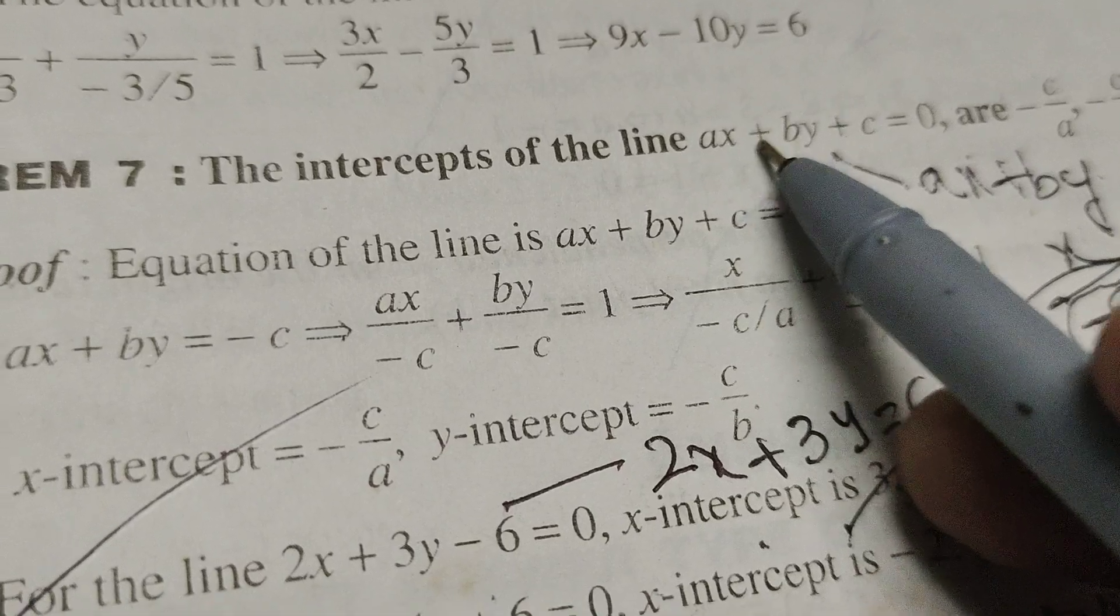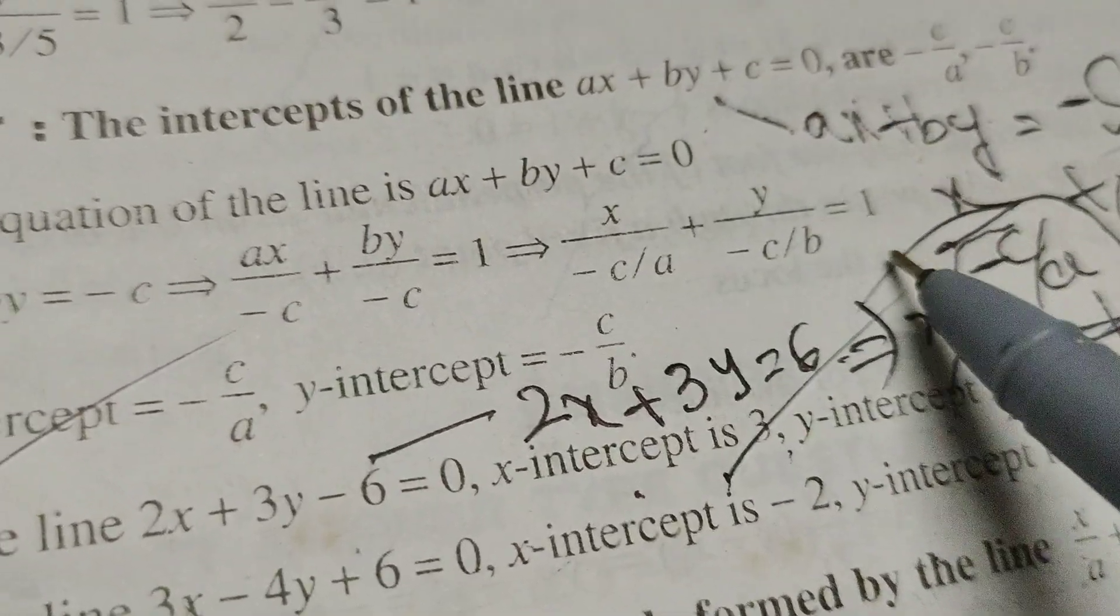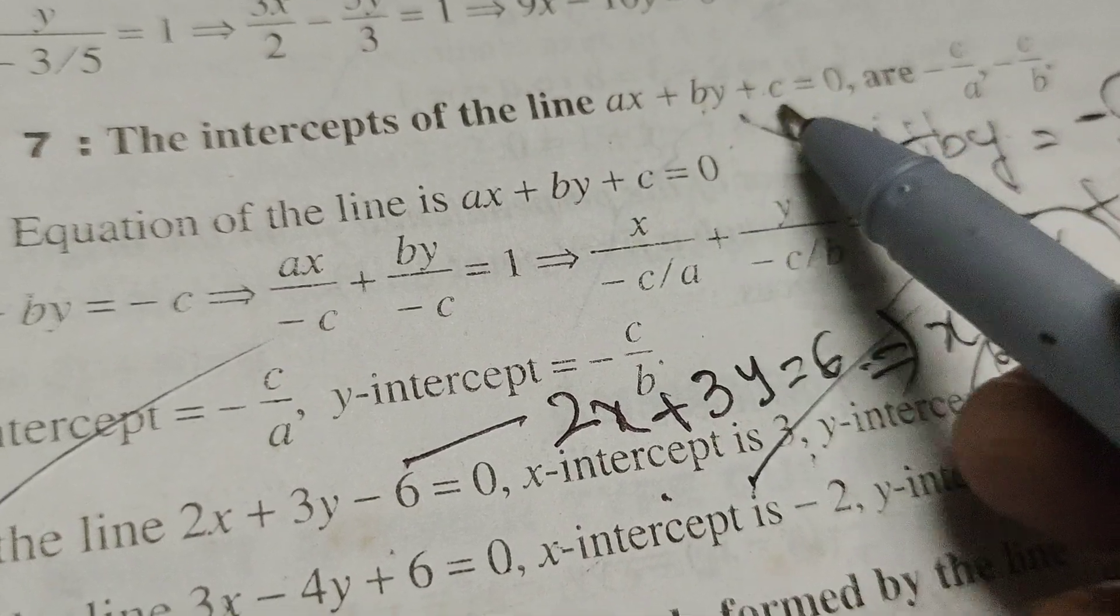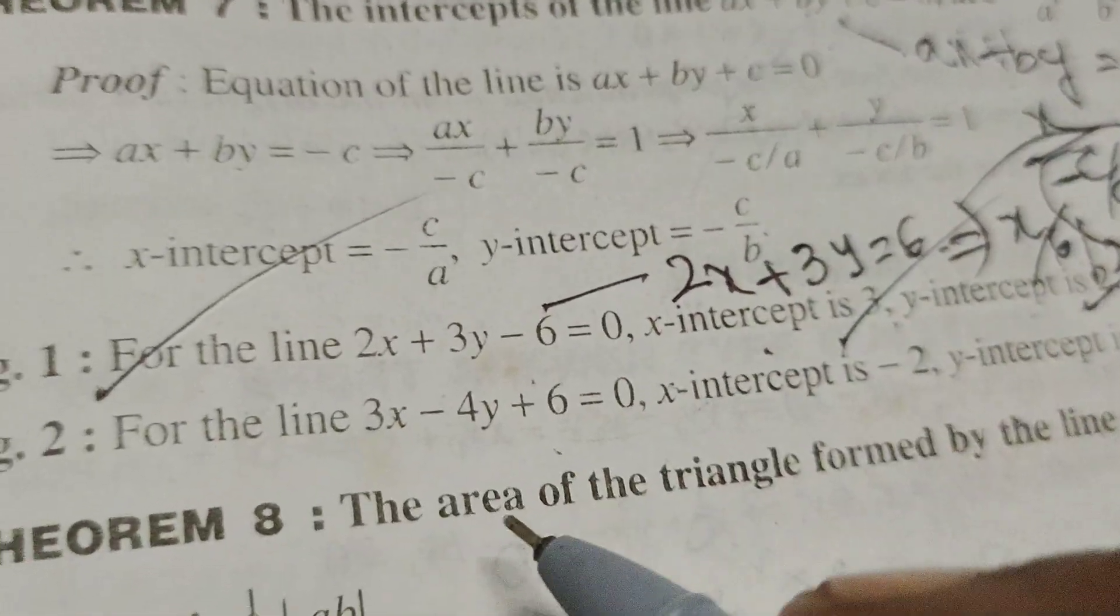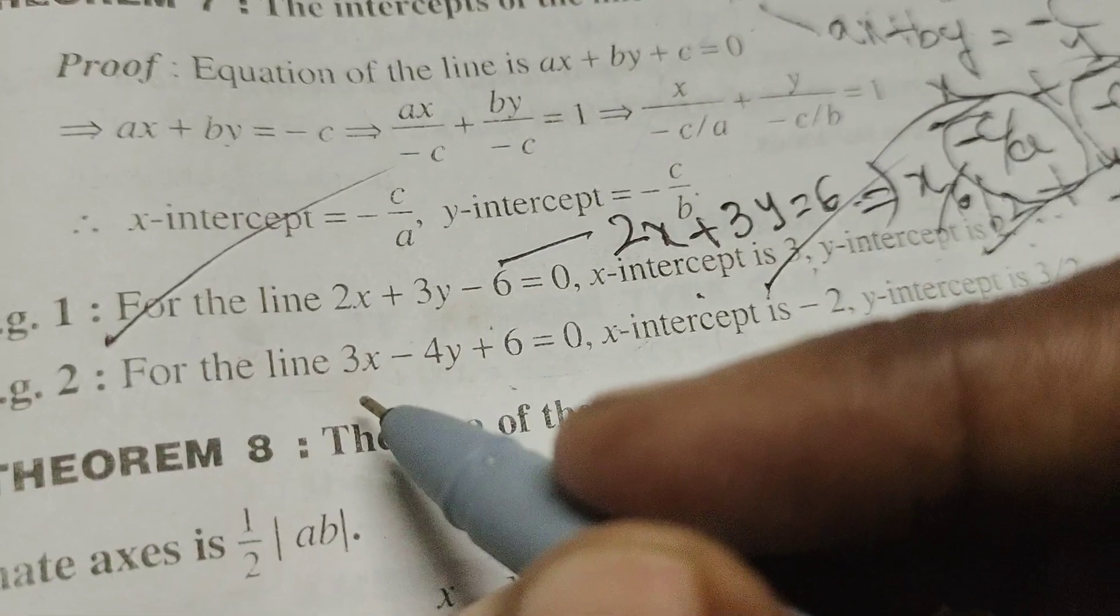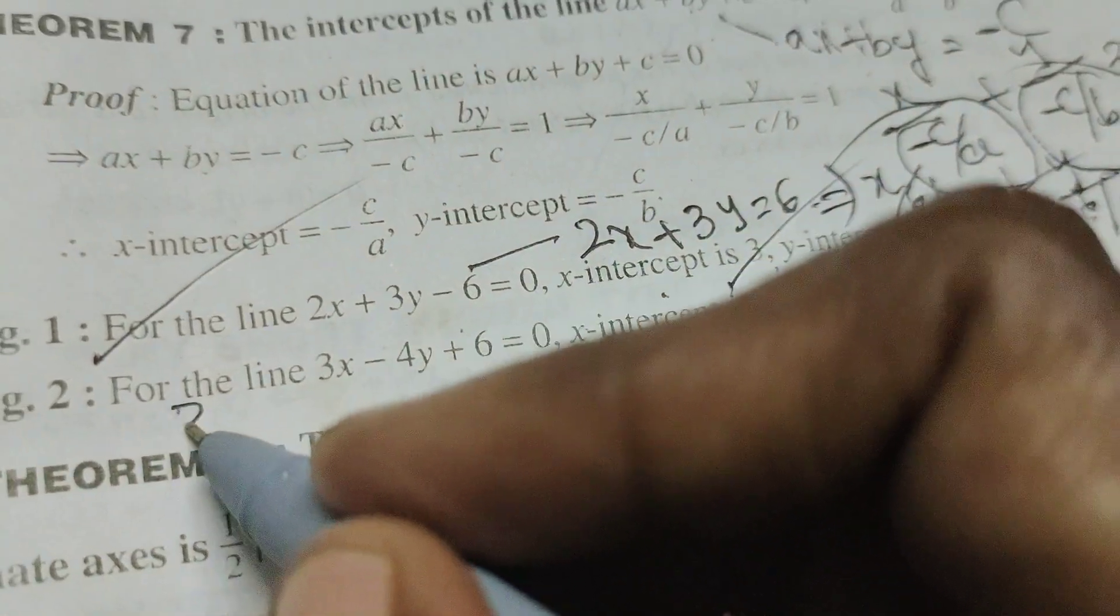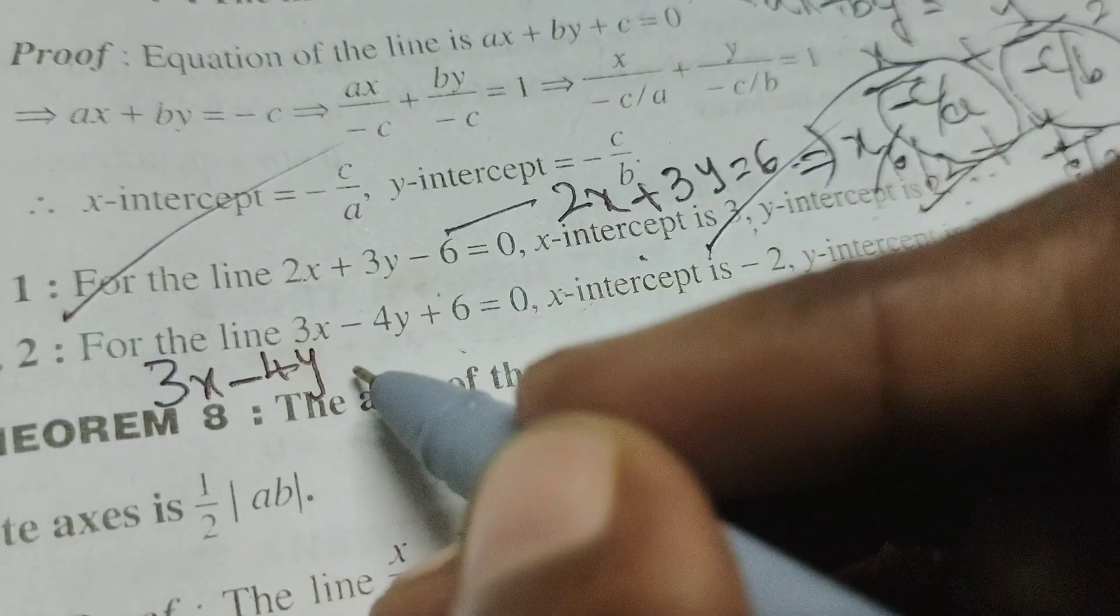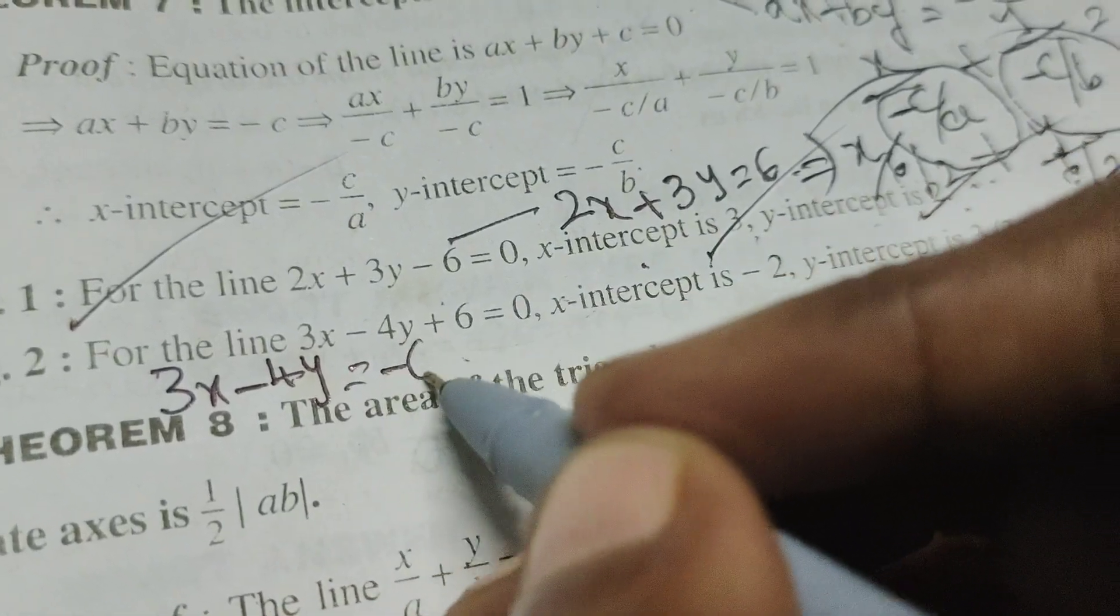According to this formula, I write x over minus c over a, y over minus c over b. So first, the given line equation, I write 3x minus 4y equals minus 6.